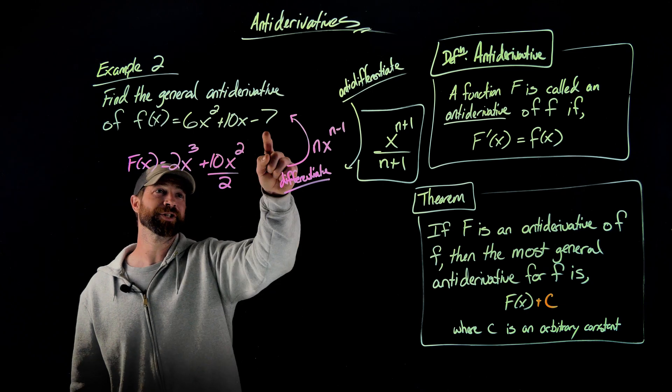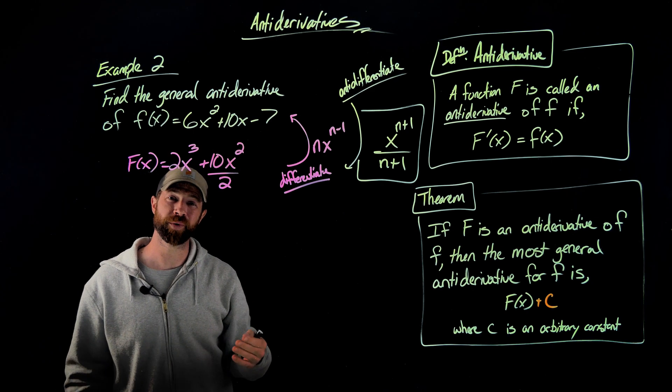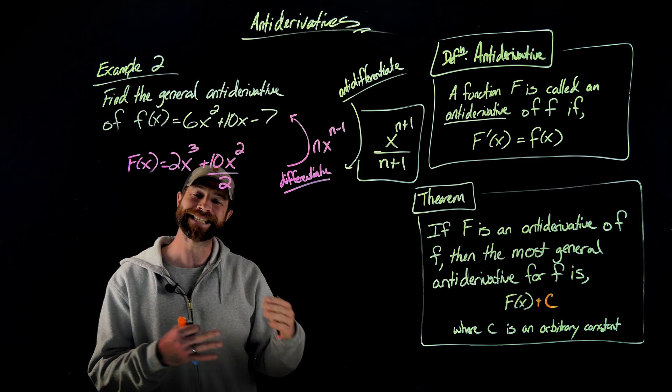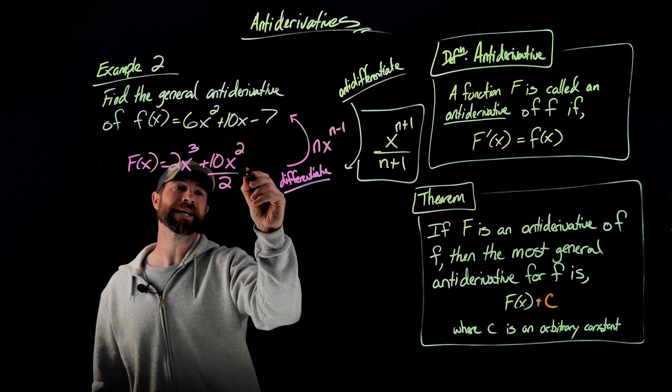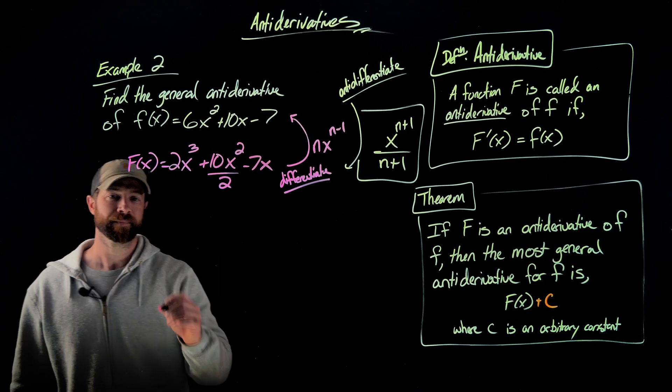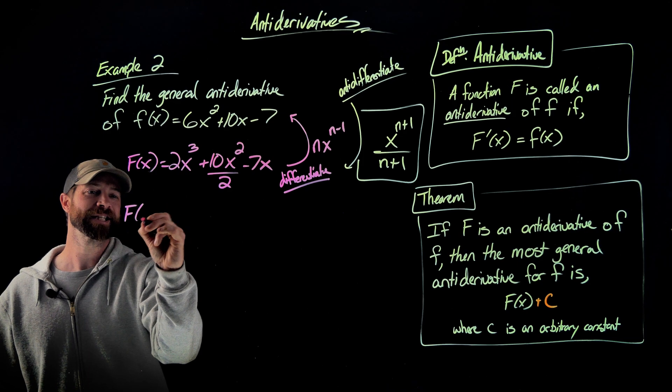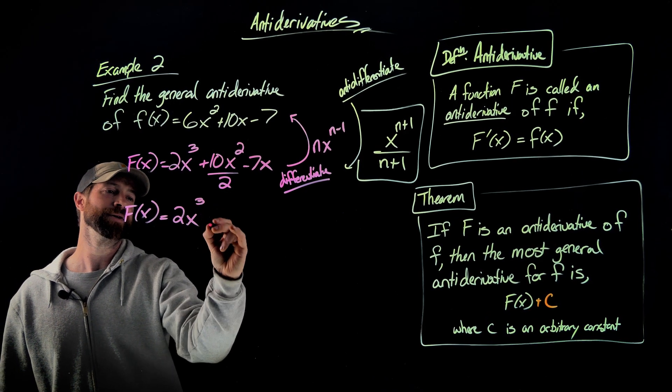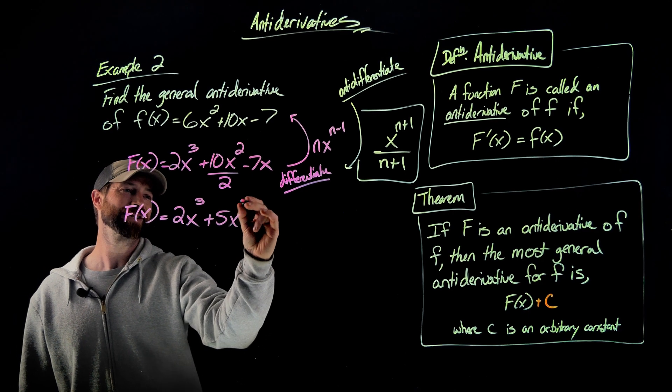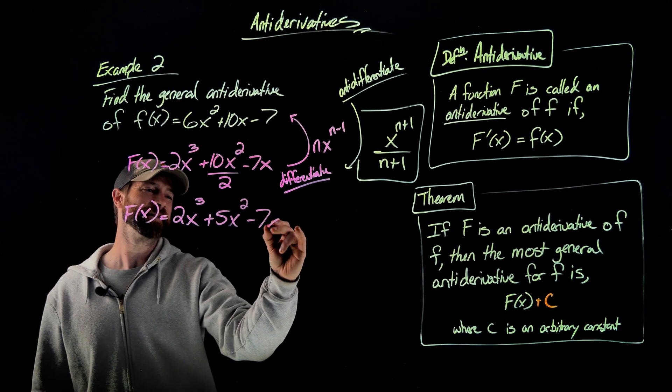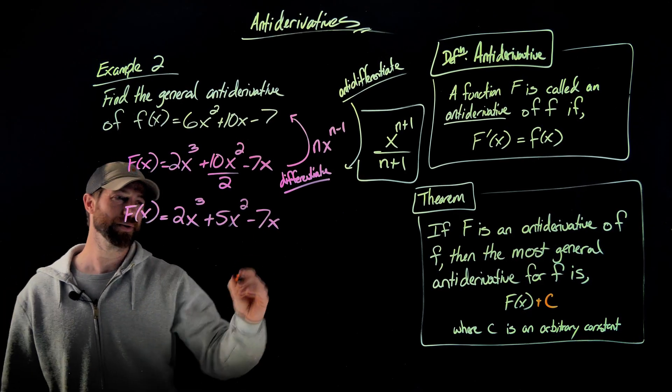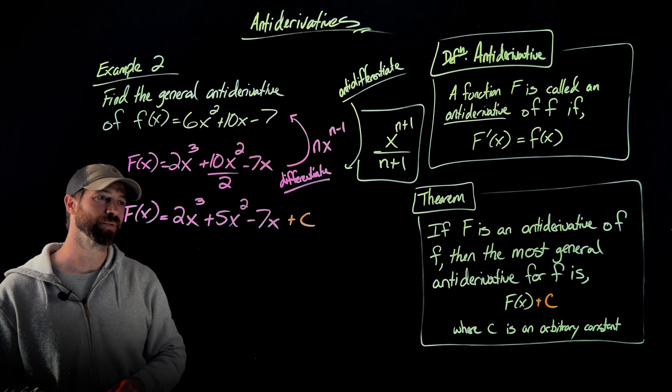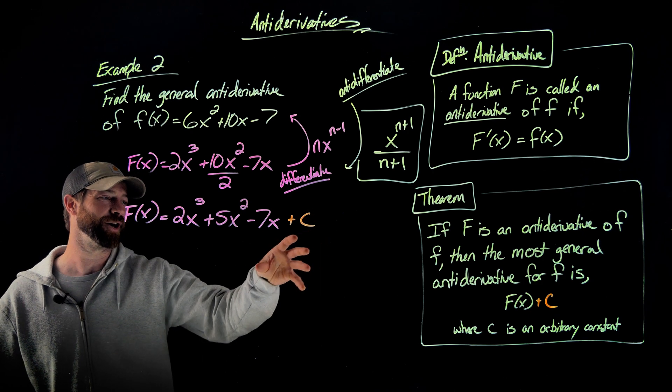And again, we'll confirm that to work here in a second. The final step is what to do with this term. And this should be pretty straightforward. What would the term be to differentiate to get to negative 7? Well, then this must have been a negative 7x. Cleaning this up real fast will give us that our anti-derivative here is 2x³ + 5x² - 7x. And I'm also going to add on this plus c to denote the fact that I want the most general derivative that I could add any constant on.